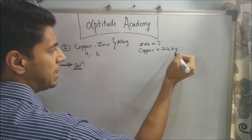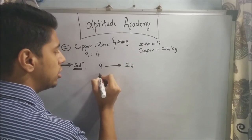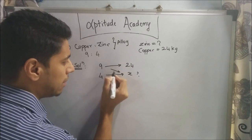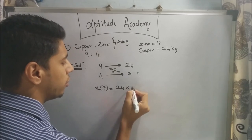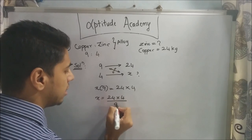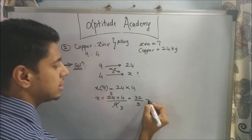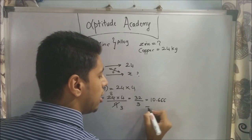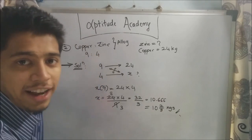Instead, we'll do the same method in one step. If 9 means 24, what does 4 mean? Cross multiply: 9 implies 24, so 4 implies x. 9x = 24 × 4. Therefore x = (24 × 4)/9 = 96/9 = 32/3 = 10.666 or 10⅔ kg. That's your final answer.